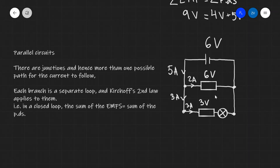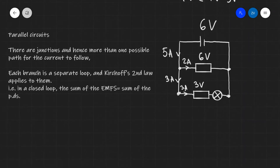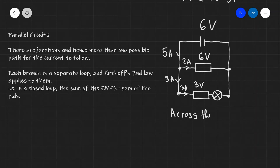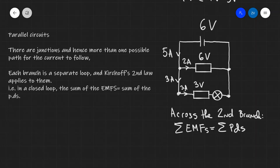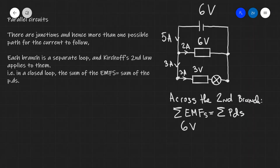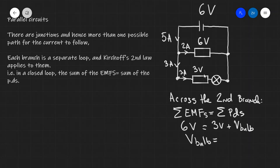Very similarly, the second branch — the one with the resistor and the light bulb — the sum of the EMFs is going to equal the sum of the PDs. The sum of the EMFs will be just 6 volts, because the 6 volt EMF still applies to this branch. This will equal the potential difference across the resistor, which is 3 volts, plus the voltage across the bulb. So we can clearly see that the voltage across the bulb will be equal to 3 volts.